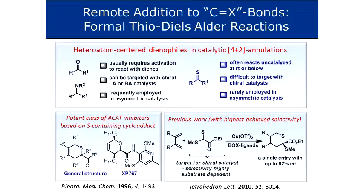Moving from C=C to C=X double bonds as dienophiles, we spent a long period looking into carbonyl compounds, imines, and equivalents — these are very difficult to work with in this type of chemistry. We then turned to thiocarbonyl compounds. In the literature they are described as very difficult substrates for asymmetric catalysis because of their inherent high reactivity — they usually react uncatalyzed at room temperature or below — whereas hetero Diels-Alder reactions with these species require a catalyst. They are also very rarely employed in asymmetric catalysis.